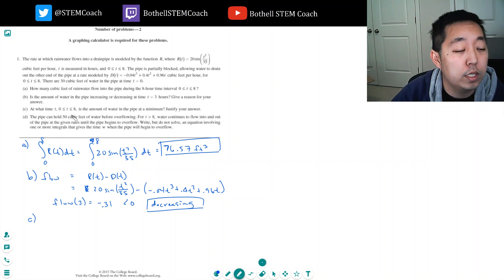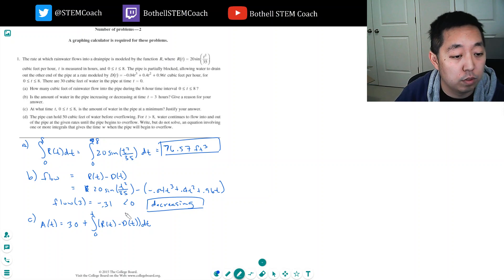Okay. Part C. At what time is the amount of water in the pipe at a minimum? Justify your answer. Okay, so the amount of water, let's find the equation for the amount of water. It's given by, well, let's see. I'm starting out at 30 cubic feet, plus the integral of the flow rate, which is R of T minus D of T, DT, right? This is the amount of water at a given time. I'm starting at 30 cubic feet, and I'm adding how much is flowing in, flowing in minus flowing out, and I'm integrating that, right?